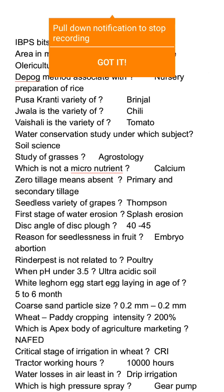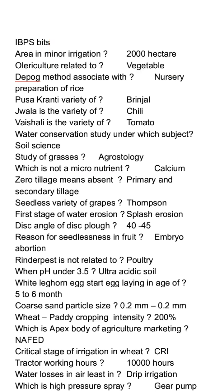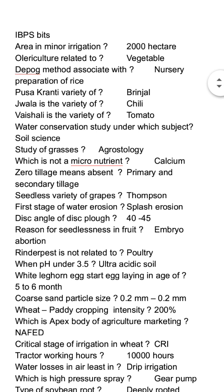Hello guys, welcome to Agriculture Tutorials. Today I am going to discuss important bits which have come in IBPS examinations previously. Minor irrigation area requires less than 2000 hectares. The Dapag method is associated with rice nursery transplantation — it is one method of rice nursery from the Philippines.